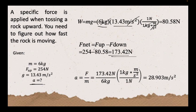So, we will need to find the acceleration. The formula for the acceleration is the force over the mass. And our given force or what we have calculated earlier, we have 173.42 N divided by 6 kg which is the mass of the rock.